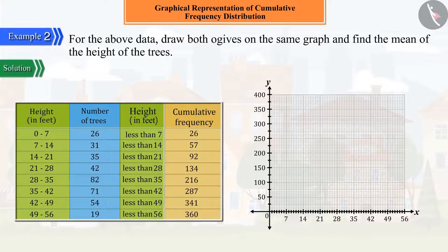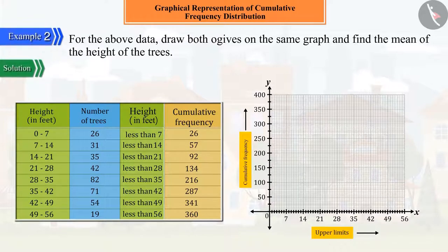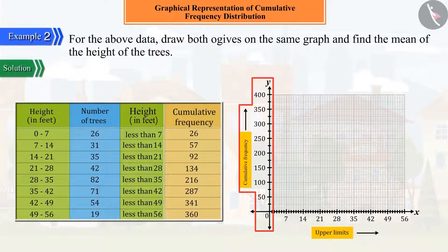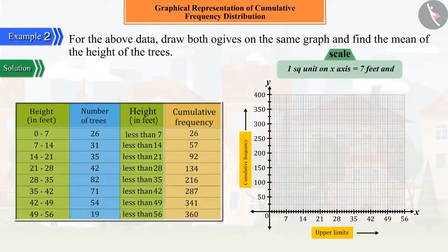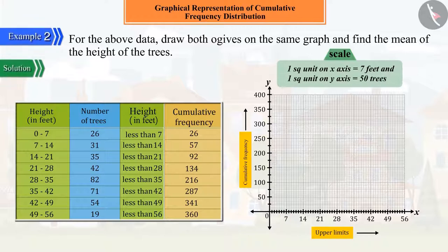To represent the data obtained from the distribution table graphically, mark the upper limits on the x-axis and cumulative frequencies on the y-axis, where upper limits indicate the height of trees and cumulative frequencies indicate the number of trees. Here, we take 1 square unit equal to 7 feet on the x-axis and 1 square unit equal to 50 trees on the y-axis.